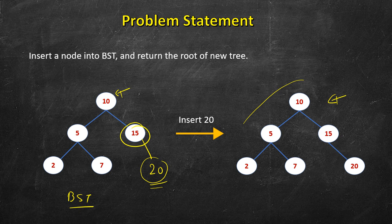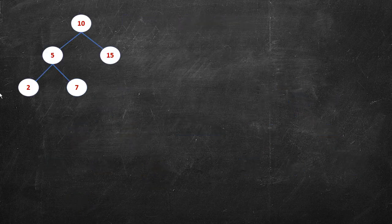We will follow a simple approach: we will compare with each node and go to either left or right depending on whether the value is more or less. Let's say we want to insert 20, so we have some function, let's call it insert node.